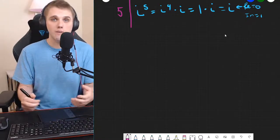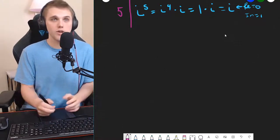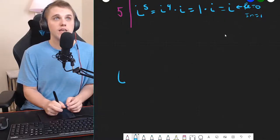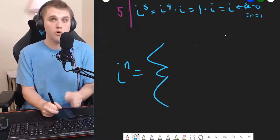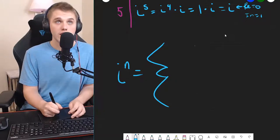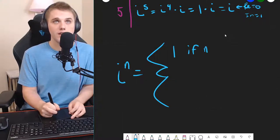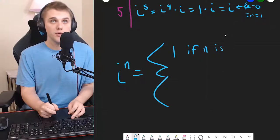So, this might look a little sloppy, but bear in mind I'm doing this so that everyone can understand what i to the n is. i to the n is one of four things.